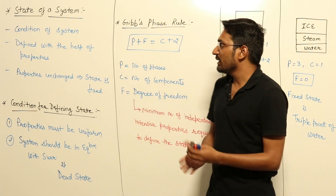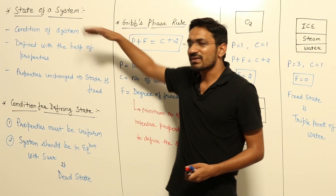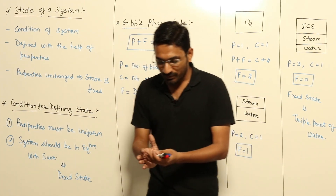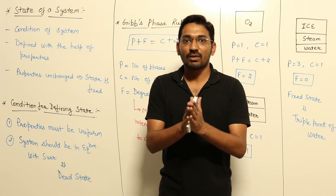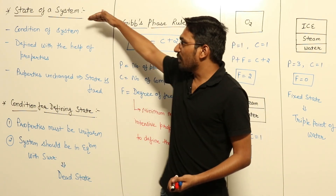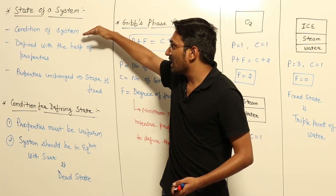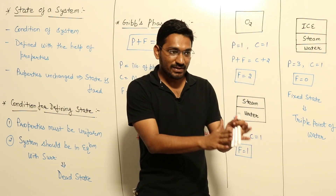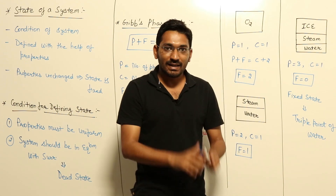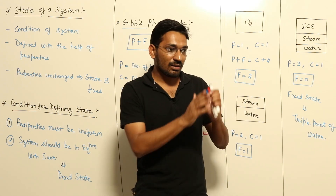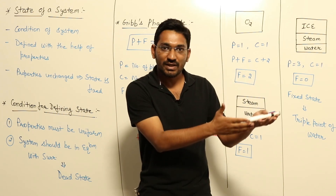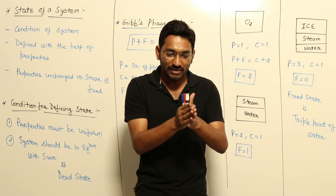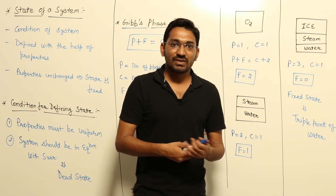Now the next topic we are going to study is: what is the state of a system? The state of a system tells us the condition of the system. When you are studying any system at present, its condition means what the pressure is, what the volume is, the mass of the system, the energy of the system — all these things together define the state of a system.